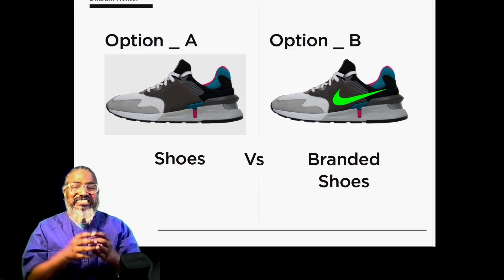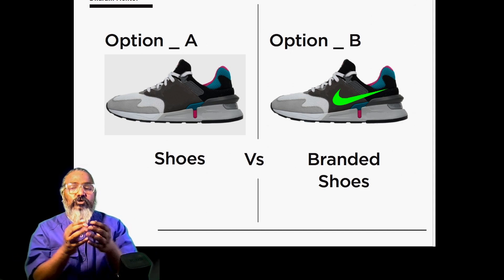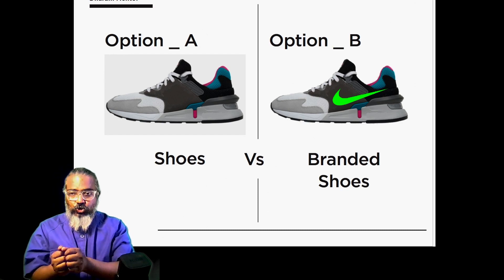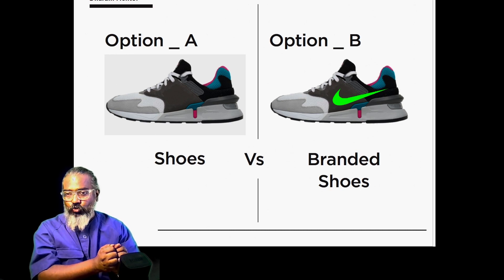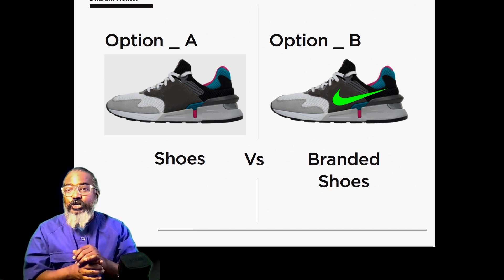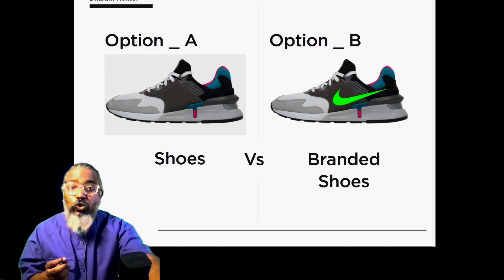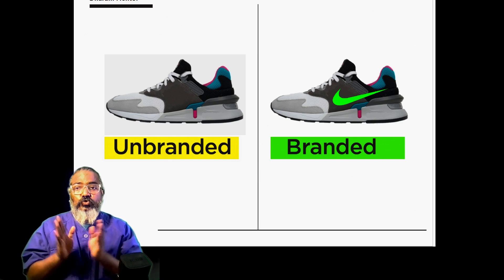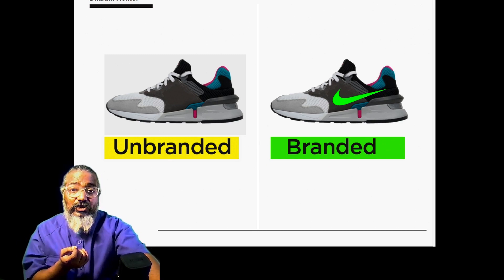Option A, technically, is just a commodity or a product. Option B is a branded product — shoe versus branded shoe, which we all know, but we have to go deep to understand the nuances. By now we've established: one is unbranded, another is branded.